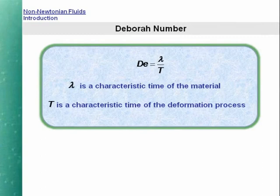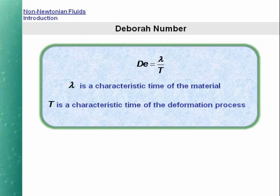At this point, it is helpful to introduce the concept of a Deborah number, defined as the ratio of a characteristic time of the material to a characteristic time of the deformation process. High Deborah numbers correspond to solid-like behavior and low Deborah numbers to liquid-like behavior. One consequence of this is that even mobile liquid systems with a very low characteristic time can behave like elastic solids in a very fast deformation process.